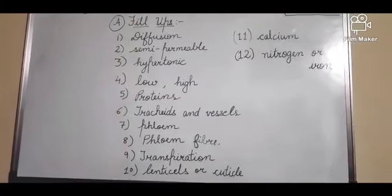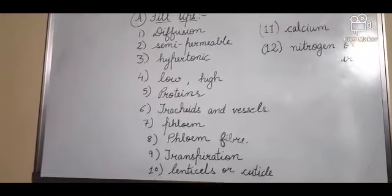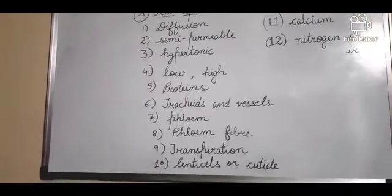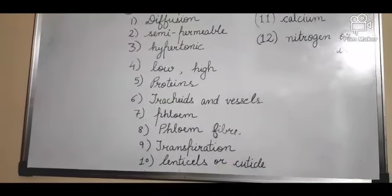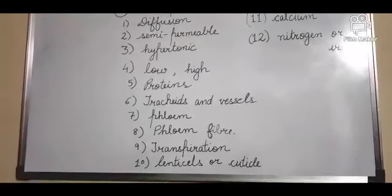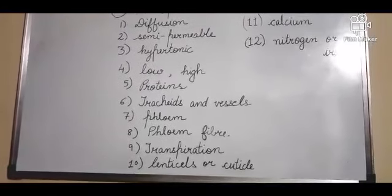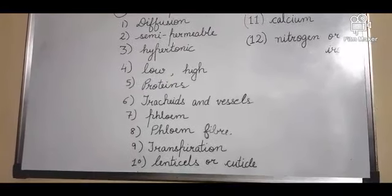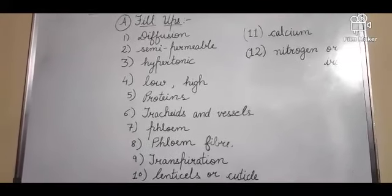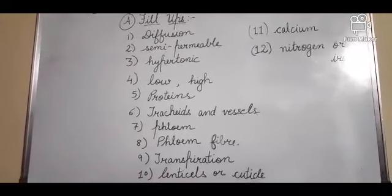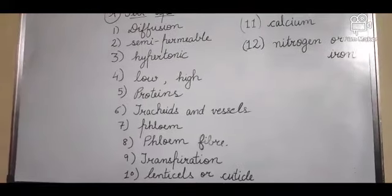Then coming to the options, that is MCQs - choose the correct option. First is the diffusion - you have to mark all of these. All of these means diffusion occurs in absorption of minerals, exchange of gases, and release of water vapors. Then root hairs are the outer growths of the epidermis. The outer layer epidermis cells - their growth outward forms root hairs.